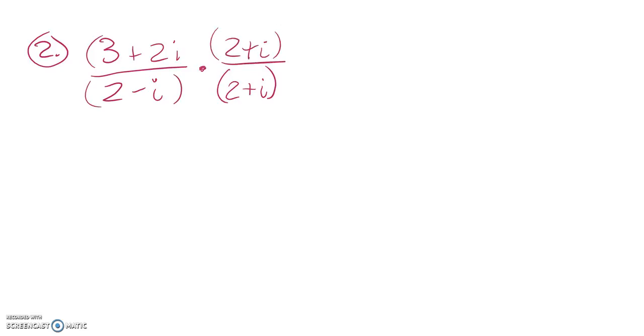And again, what that does is that takes advantage of the difference of squares relationship, where the middle term drops out, so there won't be an i left in the denominator.